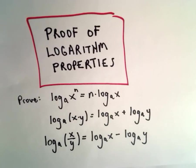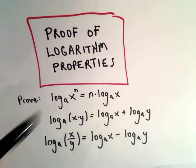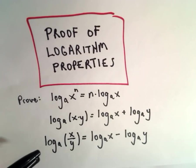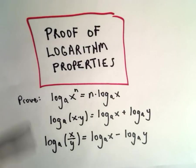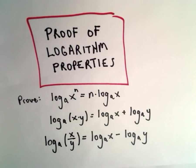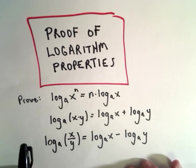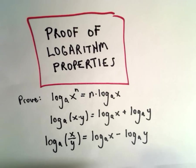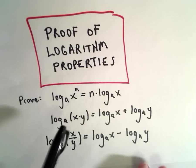In dealing with logarithms, there are three properties that get used all the time to simplify and manipulate equations. A lot of times they're just taught as things to memorize, but I want to show where they come from because it's interesting. I'm going to prove or justify these three separate rules.